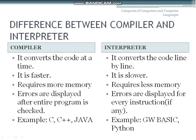This slide is a summary of the difference between compiler and interpreter. A compiler converts the code all at once, but an interpreter converts the code line by line. A compiler is faster than an interpreter; an interpreter is slower than a compiler. A compiler requires more memory, but an interpreter requires less memory.